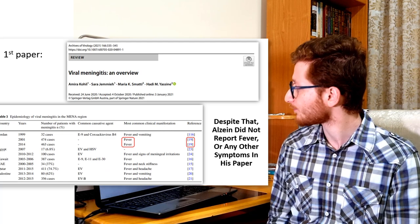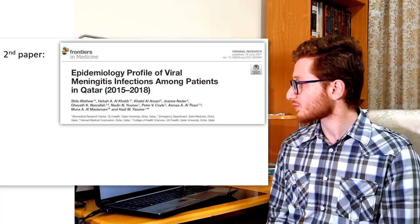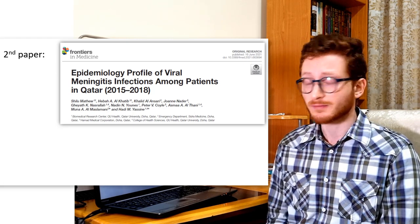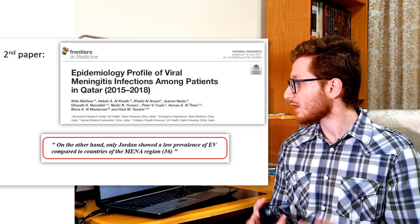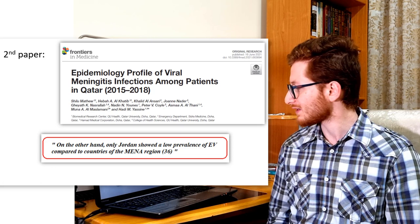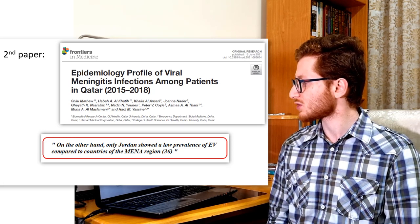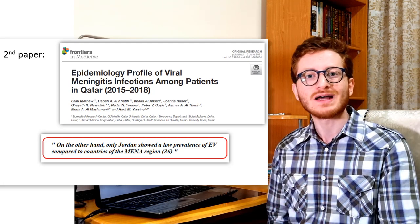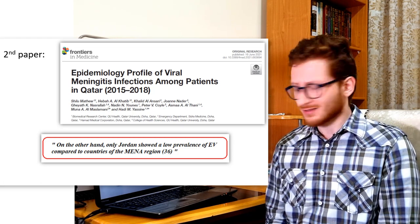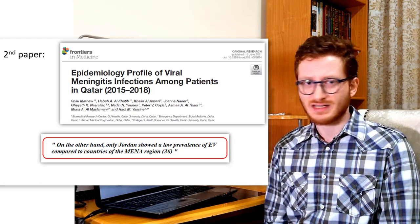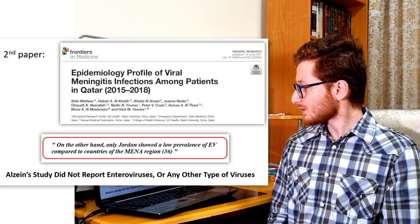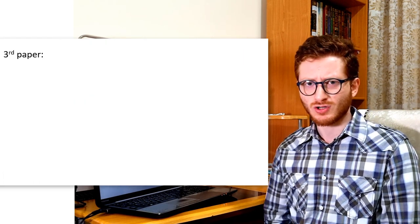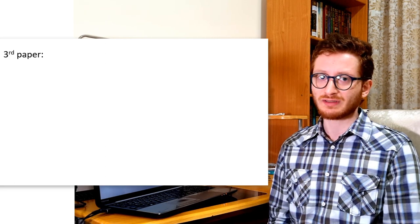The second paper that cited Al-Zayn was from Frontiers, from a really reputable publisher and from legitimate authors in Qatar. It said: 'On the other hand, only Jordan showed a low prevalence of enterovirus compared to countries of the Middle East and North Africa (MENA region),' and again Al-Zayn was cited. The problem is that Al-Zayn never mentioned enterovirus in his paper at all — it did not report enteroviruses or any other type of viruses. That's the second false citation, and we only had three citations we could access.